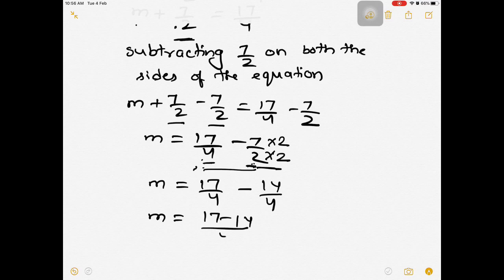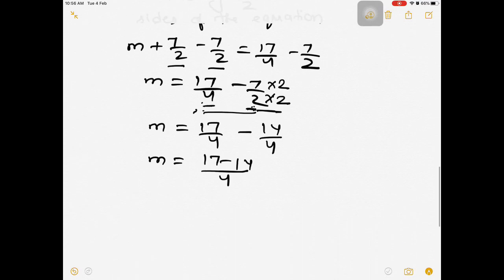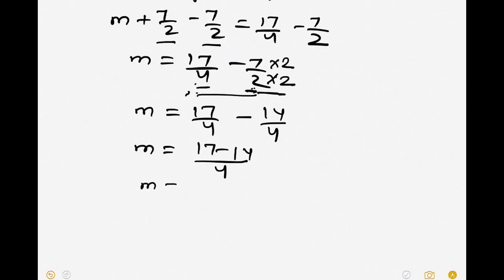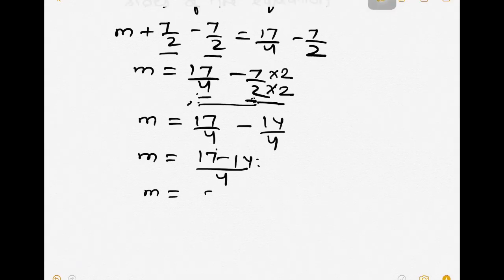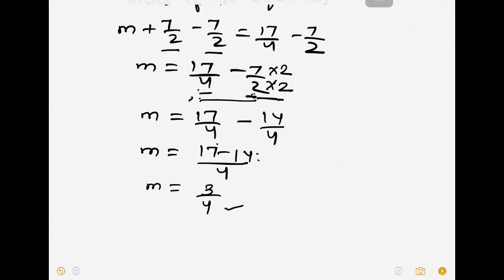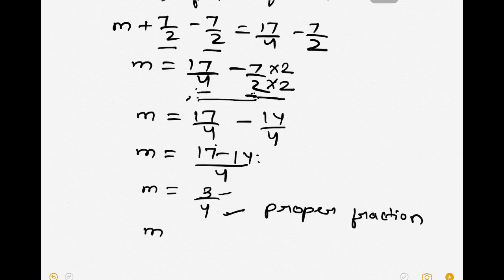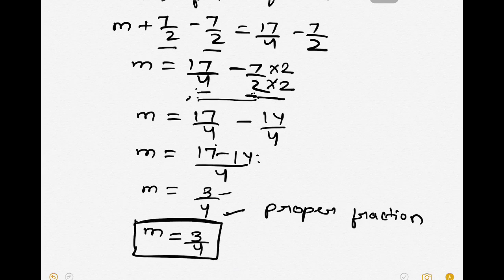So we have 17 minus 14 is 3 upon 4. This fraction cannot be converted into a mixed fraction since the numerator is smaller than the denominator — such fractions are called proper fractions. So we are left with m is equal to 3 upon 4 as the final answer.